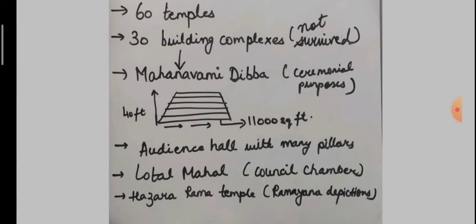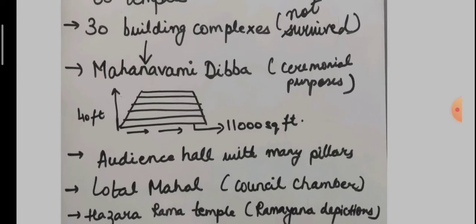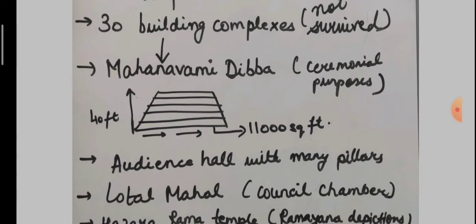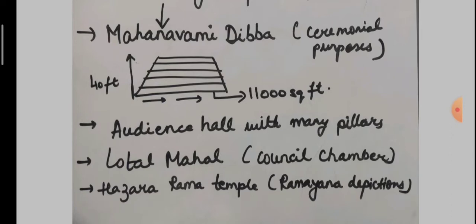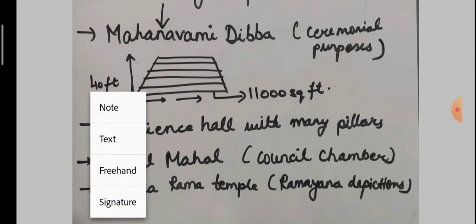which includes the Mahanavami Dibba and the audience hall. Various buildings have been found, and one of the large buildings is designated as the royal residence. It has two impressive platforms usually called the audience hall and the Mahanavami Dibba. The audience hall is a high platform which has various pillars at regular intervals and a staircase going to the second floor. But before considering it as designated for a proper function, we have to further go into research.